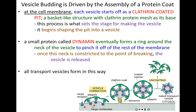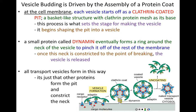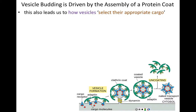All vesicles form this general way. Not all vesicles are clathrin-coated — sometimes other proteins help to form the pit or constrict the neck, but we won't cover those in detail. So all transport vesicles form in this general way; it's just that not all of them use clathrin.